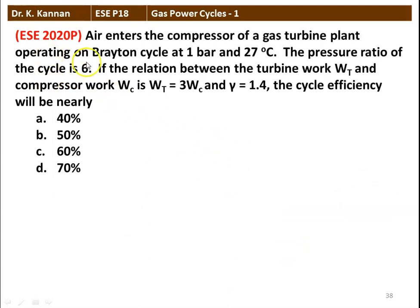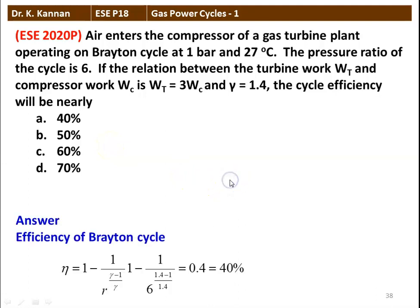The next question from the 2020 question paper: air enters the compressor of a gas turbine plant operating on Brayton cycle at 1 bar and 27°C. The pressure ratio of the cycle is 6. If the relation between turbine work Wt and compressor work Wc is Wt = 3Wc, and γ = 1.4, the cycle efficiency is nearly 40%, 50%, 60%, or 70%. The efficiency of Brayton cycle eta = 1 − 1 / (Rp^((γ−1)/γ)) = 1 − 1 / (6^(0.4/1.4)) = 0.40, which is 40%. The correct answer is option A.